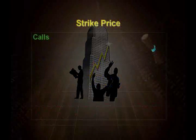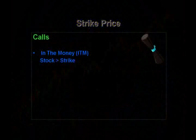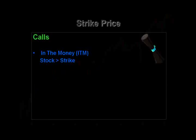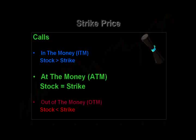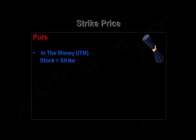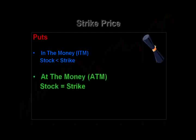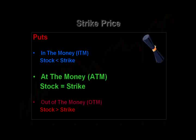Let's look at the strike price in the context of calls first. When a call is in the money, it's where the stock price is greater than the strike price. Where a call is at the money, the stock price equals the strike price. And where a call is out of the money, the stock price is lower than the strike price. With puts, it's the opposite: a put is in the money where the stock price is less than the strike price; at the money where the stock price equals the strike price; and out of the money where the stock price is greater than the strike price.